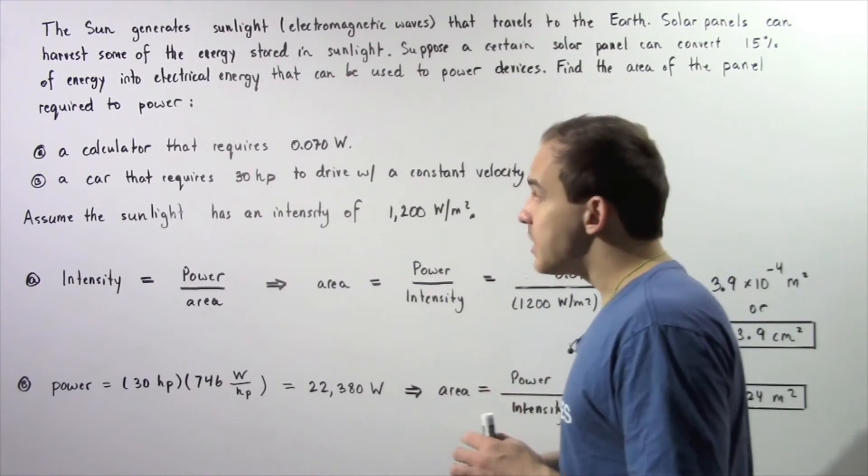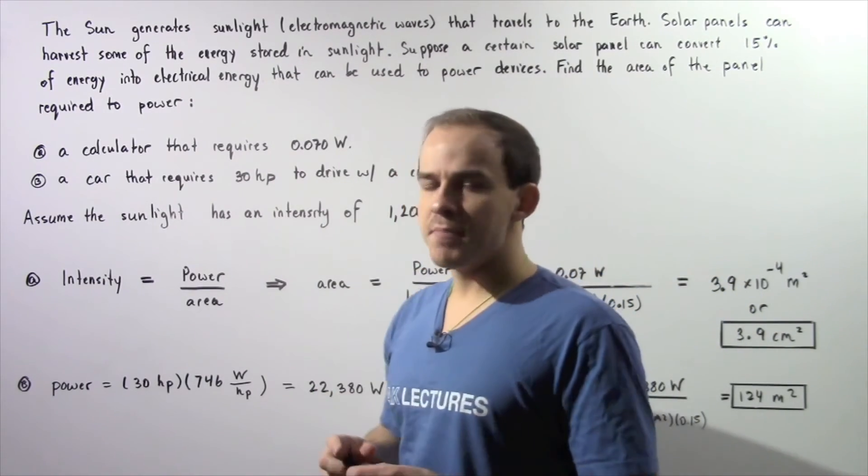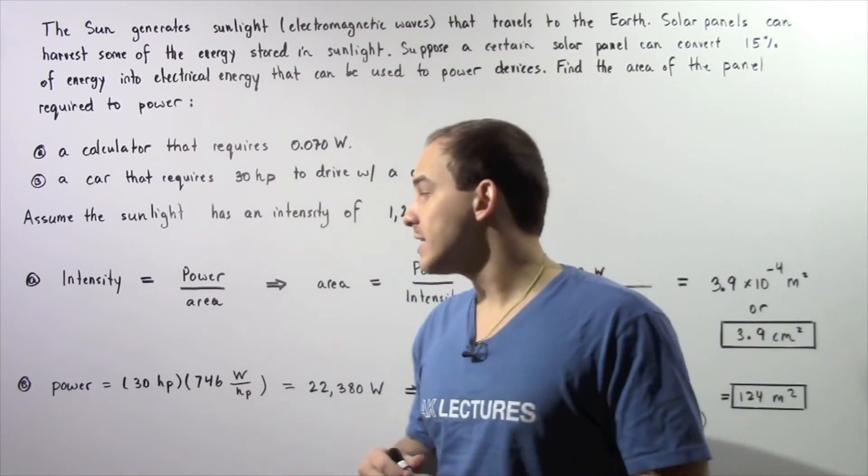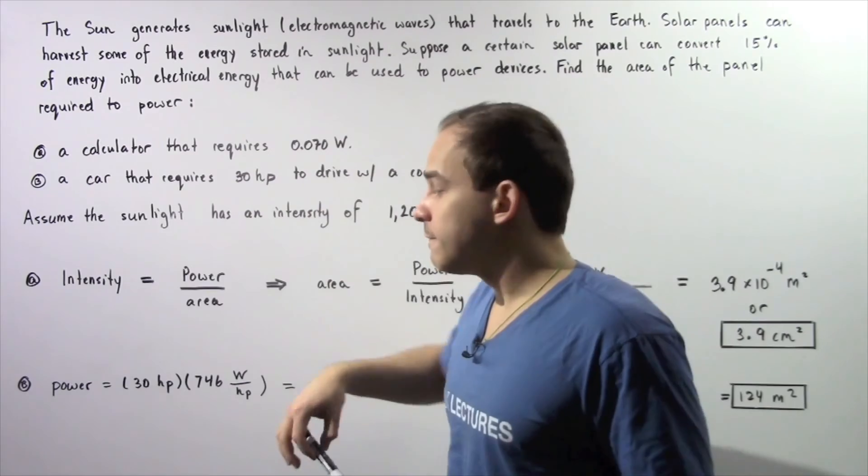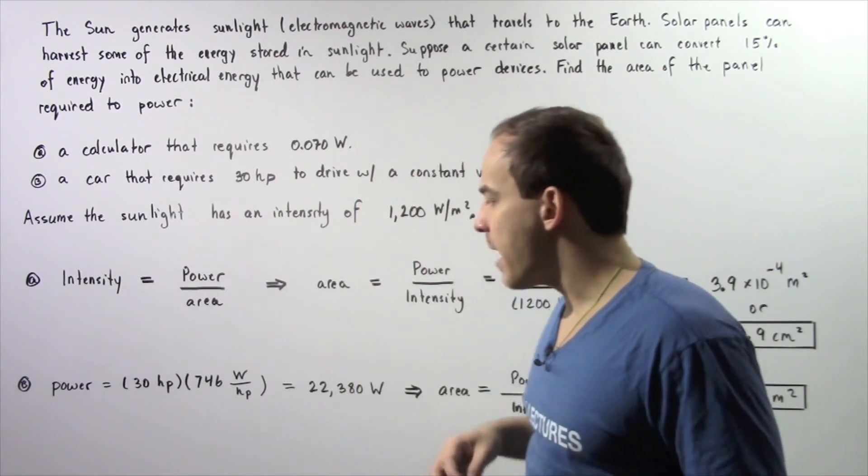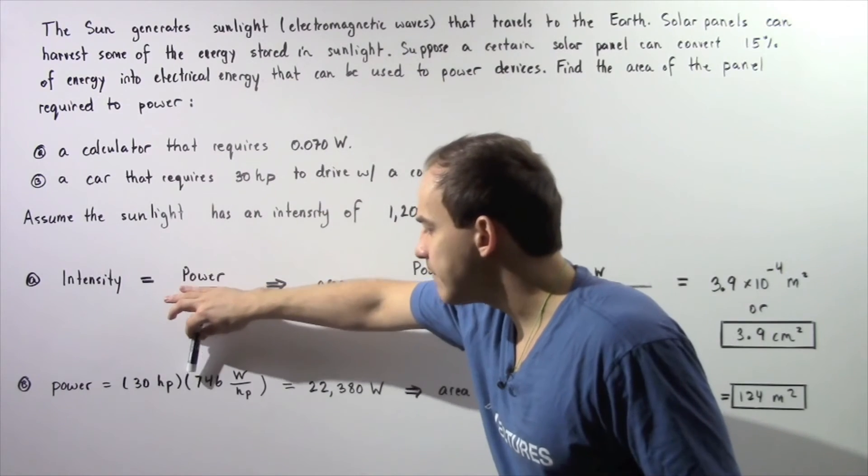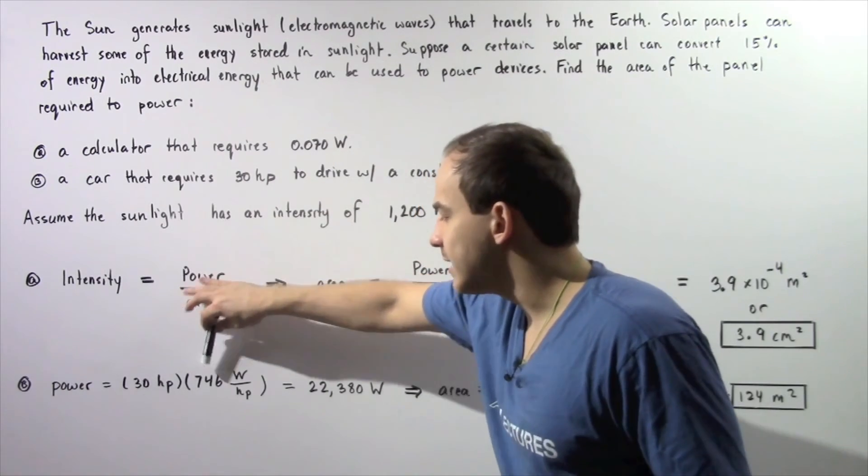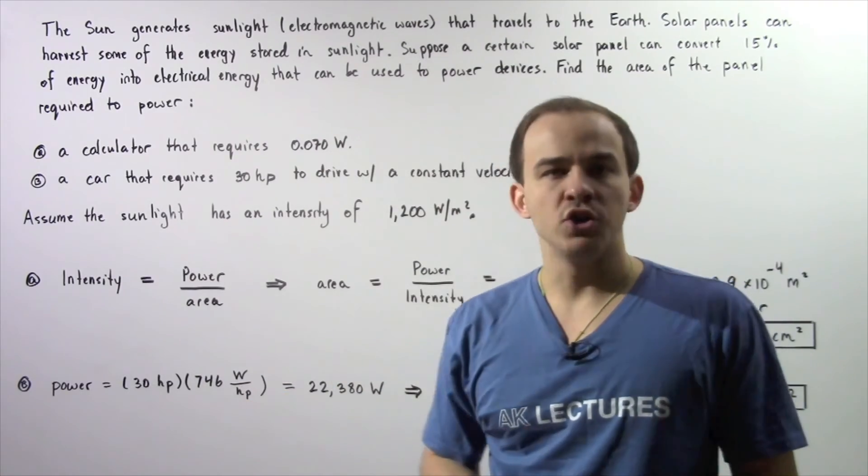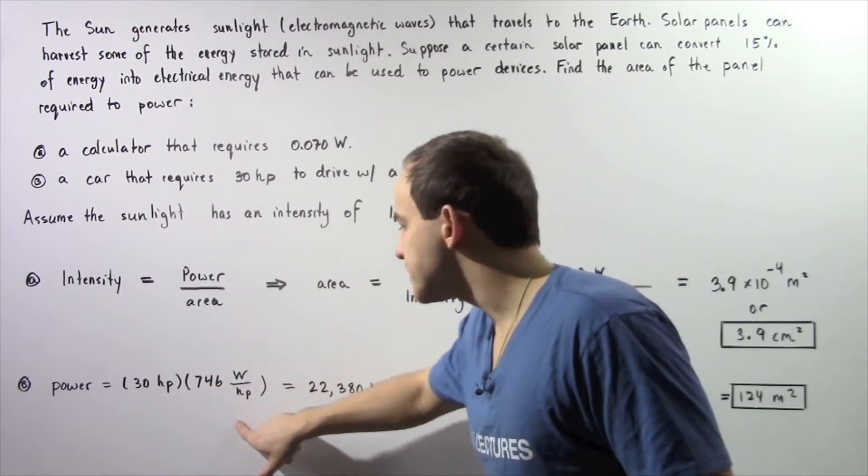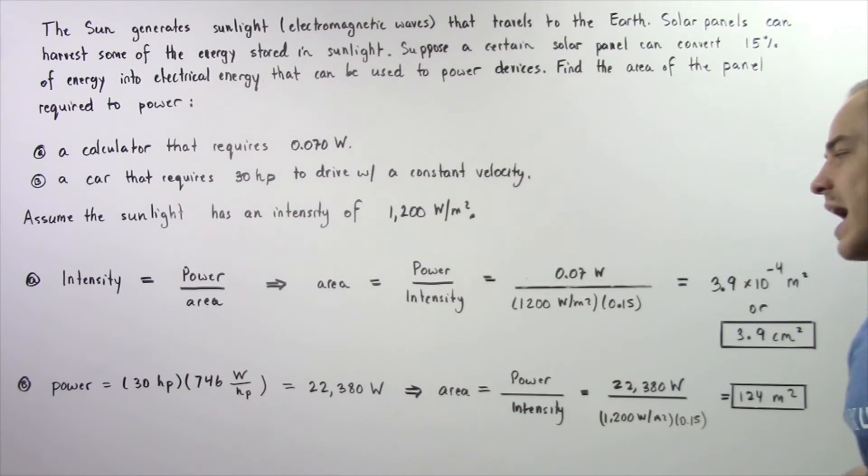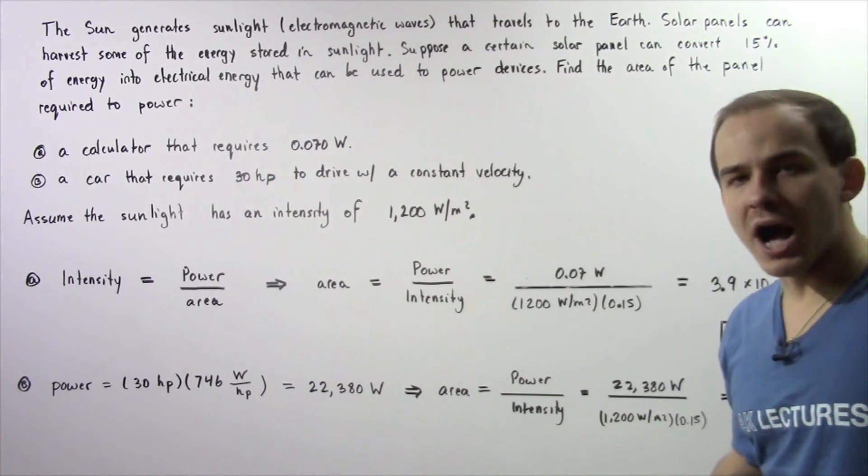Recall that inside one horsepower, there exists 746 watts of power. So to convert from horsepower to watts, we take 30 horsepower and multiply by 746 watts because there exists this quantity of watts inside one horsepower. The horsepower is canceled and we're left with 22,380 watts.